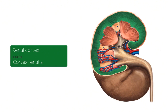The renal cortex contains different structures we'll discuss in other tutorials, including the glomeruli, blood vessels clearly seen on this image, and convoluted uriniferous tubules. You can also see here the renal columns that extend down between structures known as the pyramids of the medulla.